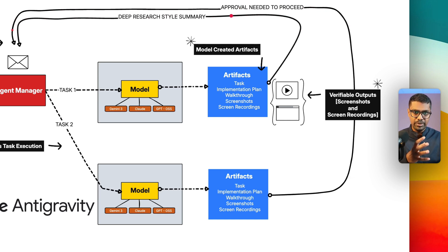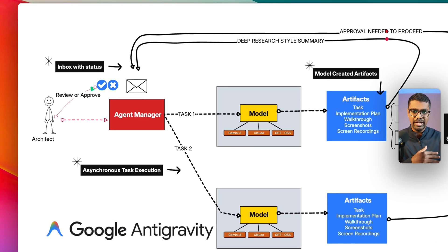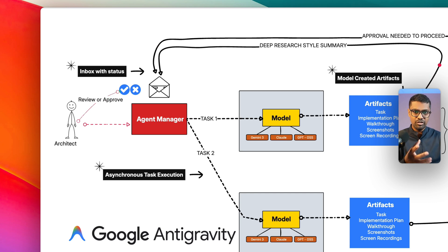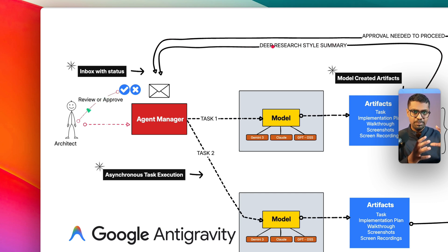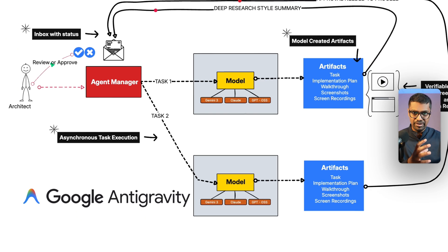The screen recording is then used by the model to verify that the functionality the user asked for has actually been implemented. Once all of this is complete, it provides a neat summary of what was completed and sends it back to the user via the Agent Manager inbox — you can think of it as an email saying this task is complete. This puts the Agent Manager in control, and you can have multiple asynchronous tasks running in parallel.